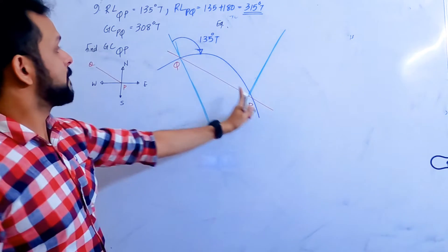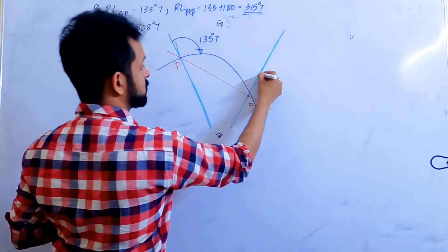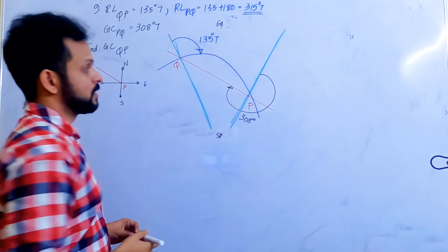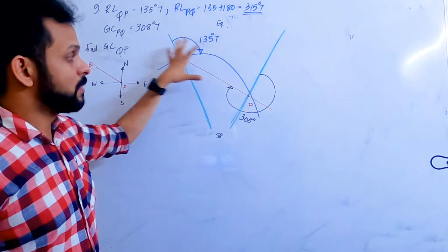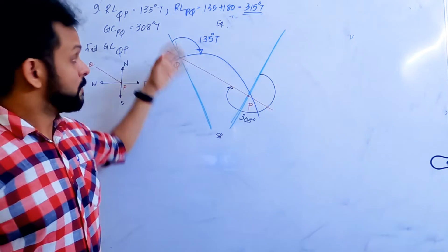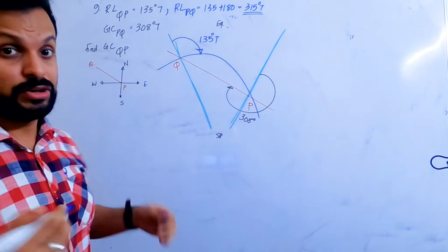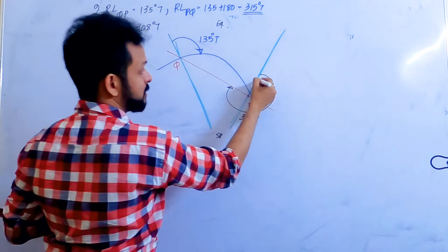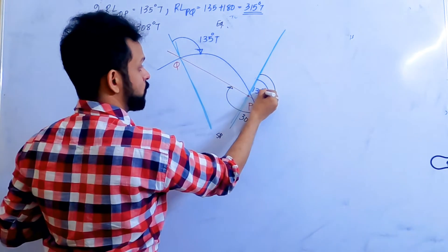The great circle track from P to Q is also given as 308 degrees. As I told you before, two angles are at two different points — you cannot compare them easily. To take the great circle track to the other side you need convergency, which I don't have. But I can easily take the rhumb line to the other side, because rhumb line tracks are lines of constant true direction — therefore this is 135 degrees at P as well.